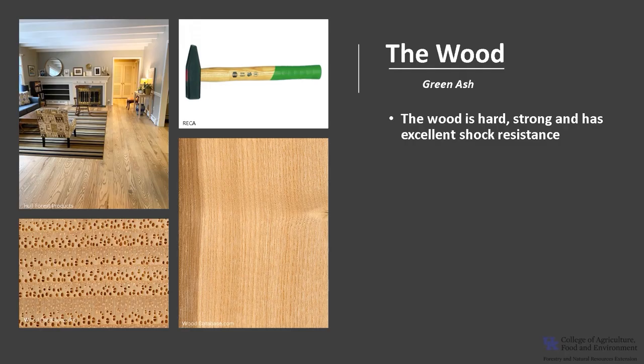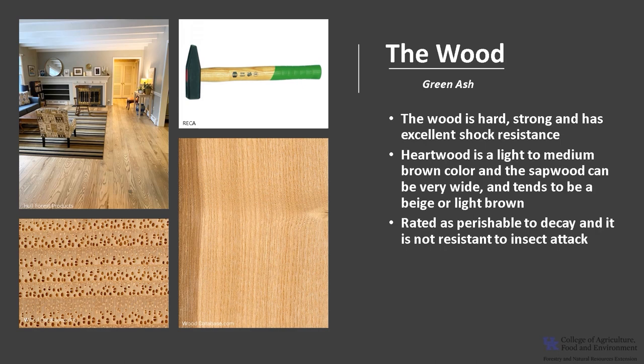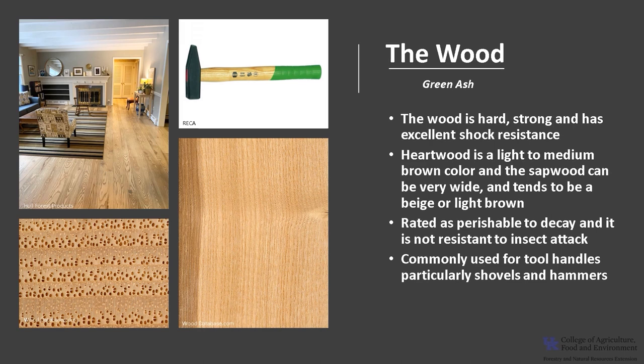The wood of green ash is hard, strong, and has excellent shock resistance. The heartwood is light to medium brown in color, and the sapwood can be very wide, tending to be beige or light brown. There is not always a clear or sharp demarcation between the heartwood and sapwood. The wood is rated as perishable in regards to decay and is not resistant to insect attack. Because the wood is hard and has excellent shock resistance, it is commonly used for tool handles, particularly shovels and hammers. The wood is also used for furniture, flooring, and cabinetry.